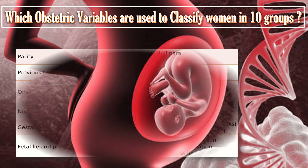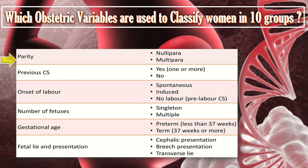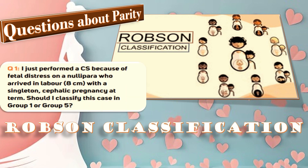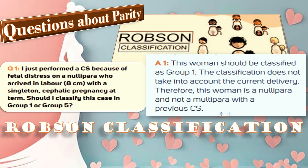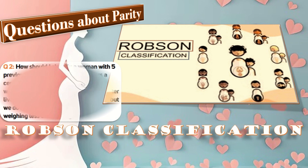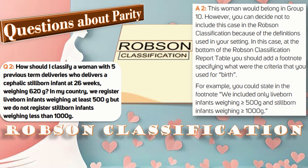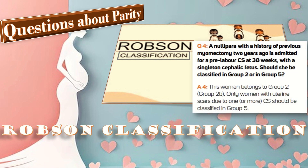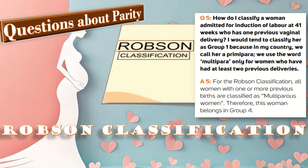The obstetric variables used to classify women in the 10 groups include parity, previous cesarean section, onset of labor, number of fetuses, gestational age, fetal lie, and presentation. Regarding practice questions on parity: a nulliparous woman with singleton cephalic pregnancy in spontaneous labor belongs to group one; a preterm pregnancy of 26 weeks belongs to group ten; a nulliparous woman with singleton cephalic presentation in spontaneous labor belongs to group one; a nulliparous woman with a previous myomectomy admitted for pre-labor cesarean section belongs to group two.